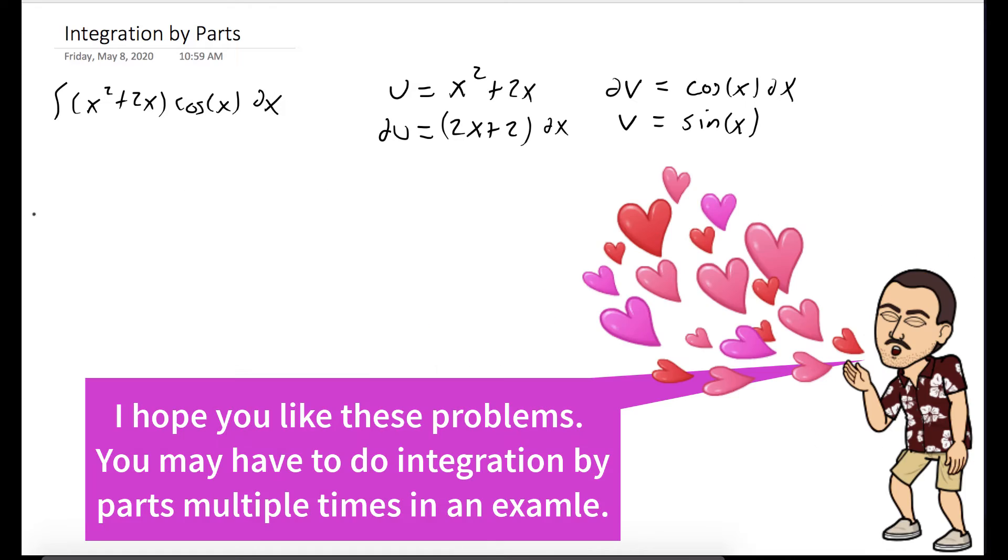So we know our integral is uv minus the integral of vdu, which is x squared plus 2x times sine of x minus the integral of 2x plus 2 sine of x dx.